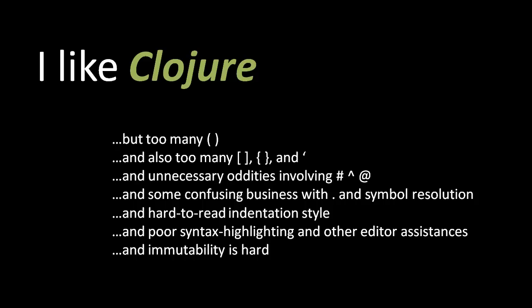You know the usual complaints about Lisp. First off, there are all too many parentheses. But then specific to Clojure's syntax, you exchange some of those parentheses for square brackets and curly braces. And then like in all Lisps, you have apostrophes floating around for quoting. In Clojure you also have syntactical oddities with special reader syntax involving the number sign, the caret sign, and the at symbol. And there's some weird business about symbol resolution rules — symbols containing dot and symbols containing slashes get resolved in special ways, which is a bit complex.